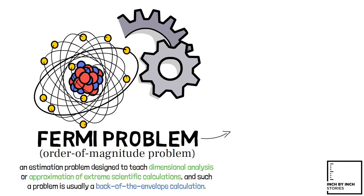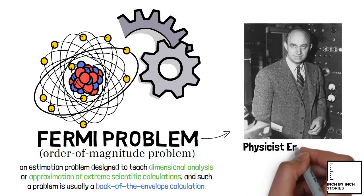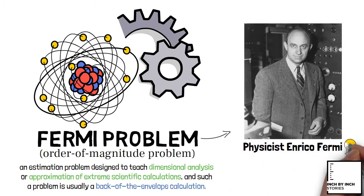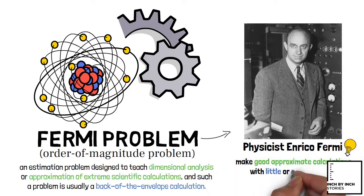The estimation technique is named after physicist Enrico Fermi as he was known for his ability to make good approximate calculations with little or no actual data.